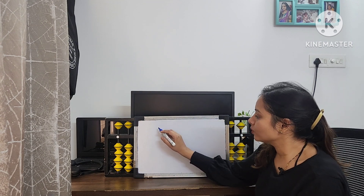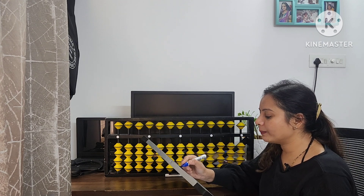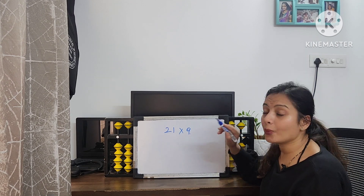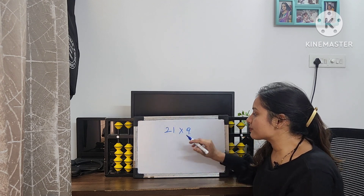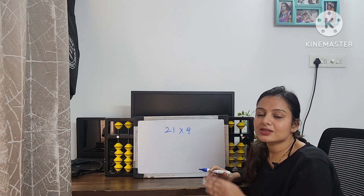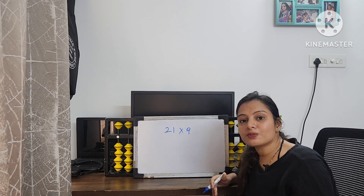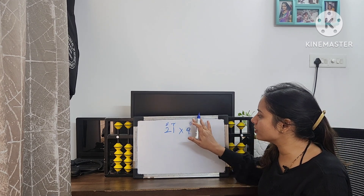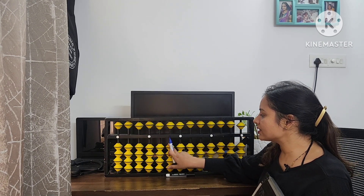We have to count the digits of the question. For example, if we want to do 21 multiplied by 9, we have 3 digits total. So we have to shift 3 places back — that means we start from the 3rd place. The 1st place is the units place, the 2nd place is the tens place, and the 3rd place is the hundreds place. So we have to start from the hundreds place.